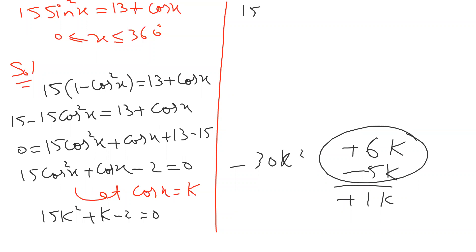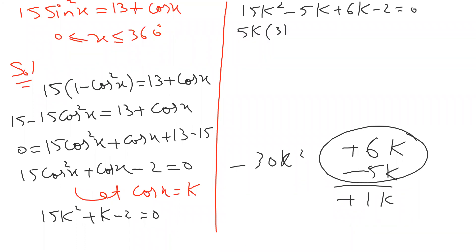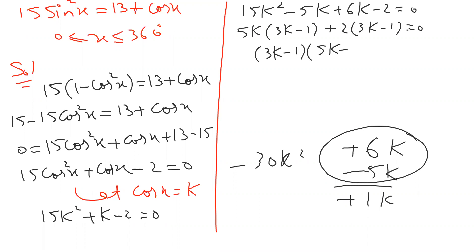So on the top: 15K squared plus 6K minus 5K minus 2 equals 0. Taking 5K common: 5K(3K minus 1), and 2 common: 2(3K minus 1). So better to avoid the quadratic formula because factoring is time-saving and we need the working. I got two answers.